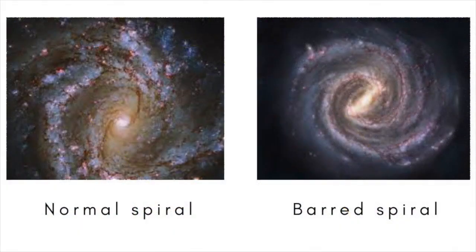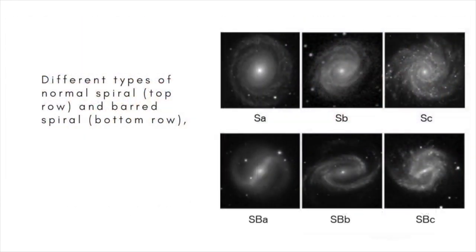There are two main types of spiral galaxy: ordinary spirals and barred spirals. Each of these is divided into subtypes, which differ in the prominence of the central bulge and how tightly wound the spiral arms are. Spiral galaxies and lenticular galaxies together make up the class known as disk galaxies.